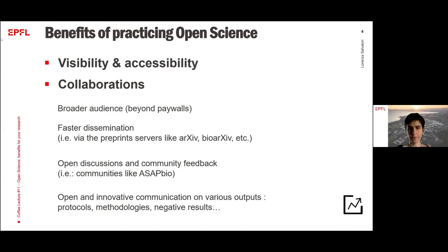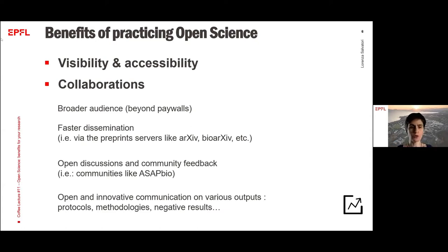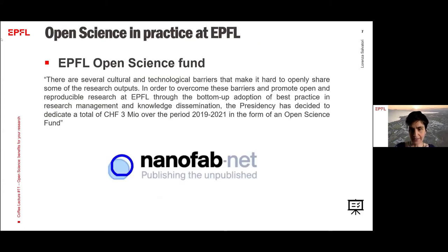There are communities like ASAPbio, which is focused on the dissemination of research results via preprint. Practicing open science also means that you communicate on various outputs — this is quite an open and innovative way of sharing science, because we don't share only classical publications, but also protocols, methodology, and even negative results, which is very important. With this last category, I will let the floor to Mohamed because he will show you the NanoFabNet project.